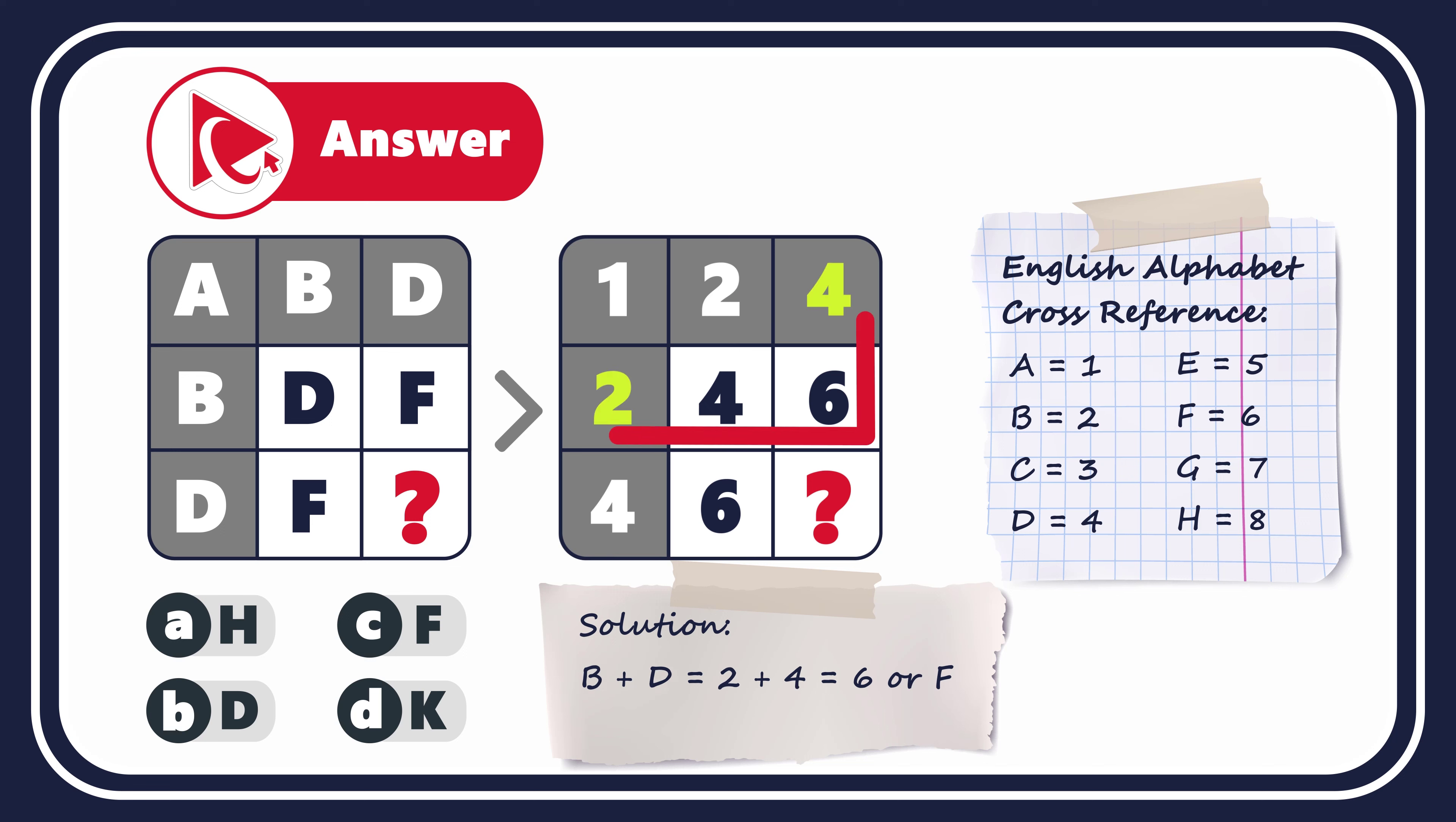2 plus 4 equals 6. This is the result of the calculation in the third row, which would mean that the missing number on the intersection of 4 and 4 will be calculated as addition of 4 plus 4, which would be equal to 8. So the correct answer here is choice A: H, because H is the letter that corresponds to the number 8.